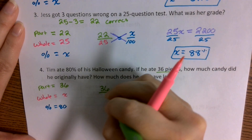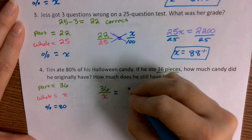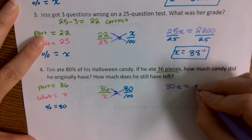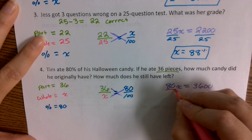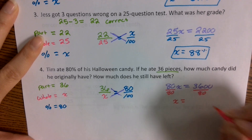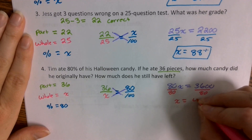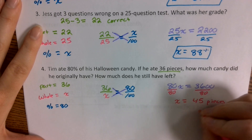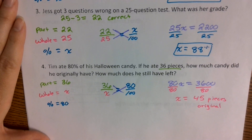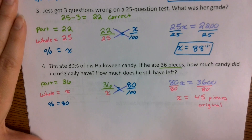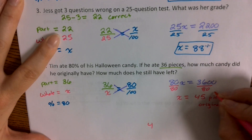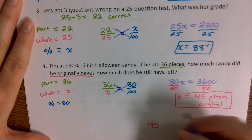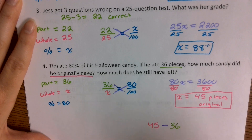We're going to set this up as 36 over X equals 80 over 100, then do our cross product. We multiply 80 times X to get 80X, and 36 times 100 to get 3,600. Then we divide both sides by 80 and X comes out to 45. So he originally had 45 pieces. To figure out how much he had left over, we take 45 and subtract the 36 that he ate, which leaves us with 9 pieces.